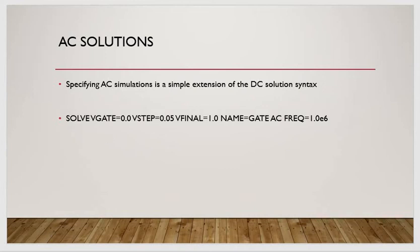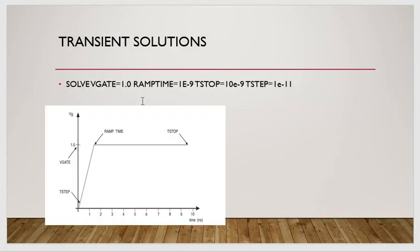For transient solutions: 'solve vgate=1.0' applies 1 volt at the gate. You set ramp time — for example, 1e-9 seconds (1 nanosecond) to ramp up to 1 volt — and the simulation stops at 10 nanoseconds, stepping in increments of 10 picoseconds.